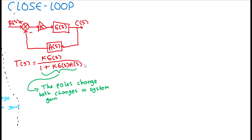Recalling the earlier slide, we see that in the closed-loop system's block diagram, we obtain the transfer function T equal to K times G divided by 1 plus K times G times H. The properties of the root locus can be derived from this equation, specifically from the characteristic polynomial, which is 1 plus K times G times H.